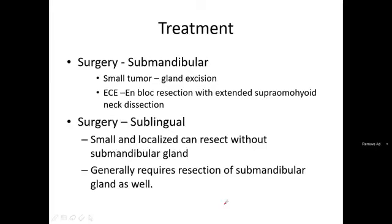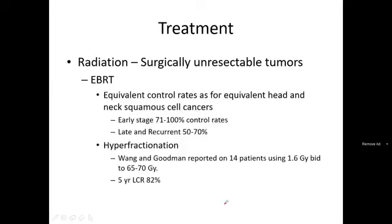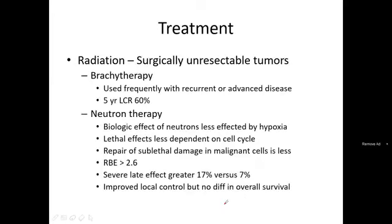For submandibular tumor, gland excision is performed with an en-bloc resection with extended supramylohyoid neck dissection. For sublingual cancer localized without submandibular gland involvement, resection of the submandibular gland may also be included. Radiation treatment options include EBRT with photon or electrons, conventional or altered fractionation, brachytherapy, and neutron therapy. Neutron therapy is particularly important to remember.